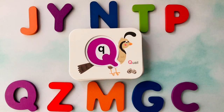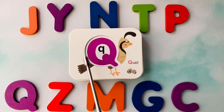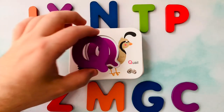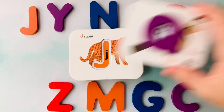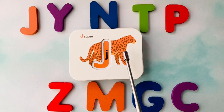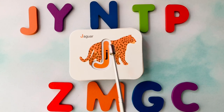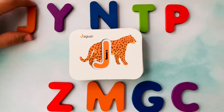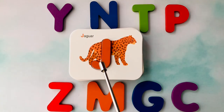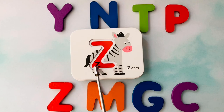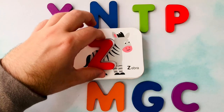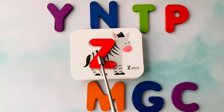Let's learn letters. This is a quail. Quail starts with the letter Q. This is the letter Q. Q is for quail. This is a jaguar. Jaguar starts with the letter J. This is the letter J. J is for jaguar. This is a zebra. Zebra starts with the letter Z. This is the letter Z. Z is for zebra.